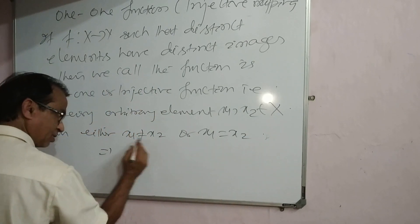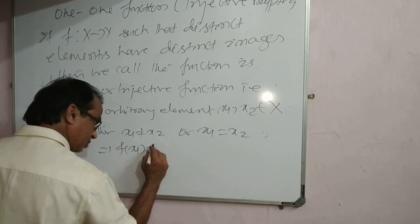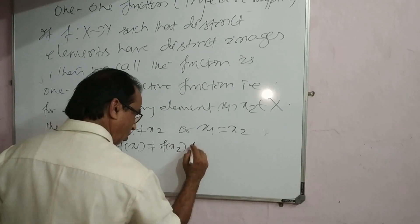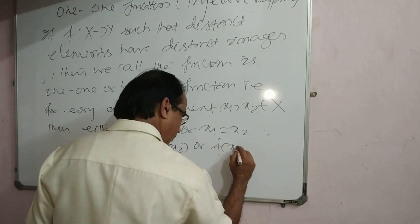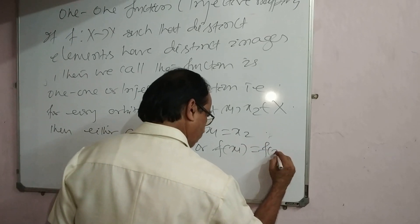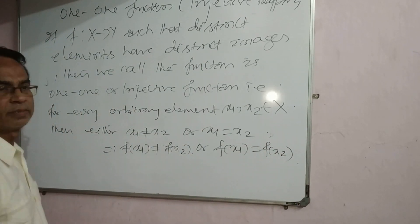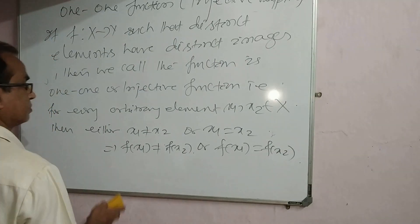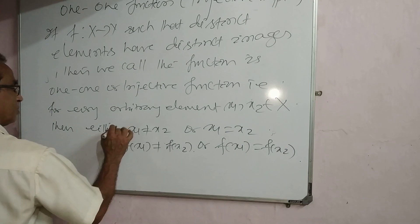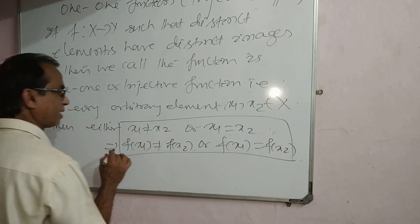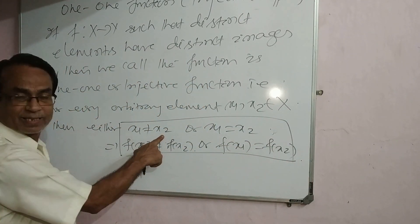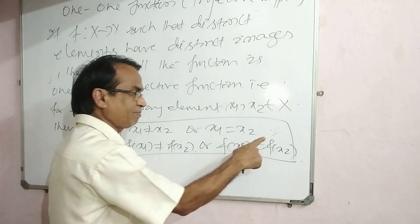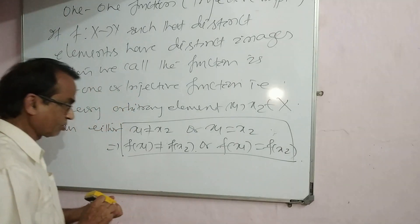So if x1 is not equal to x2, we have to show that f(x1) is not equal to f(x2). Or if f(x1) equals f(x2), then x1 equals x2. This is the method: if the elements are different, then images are different. If the elements are same, then images are same.